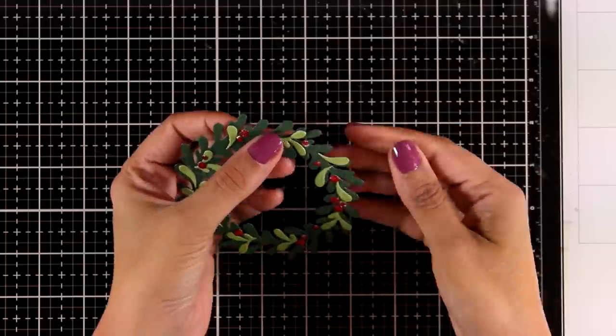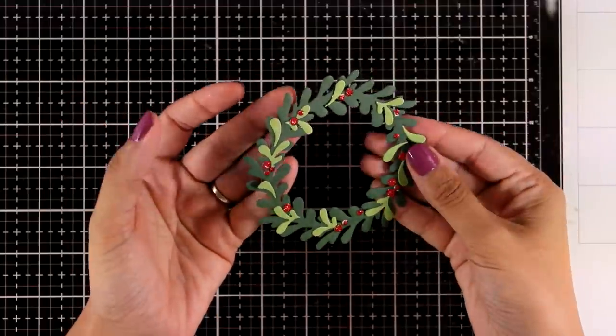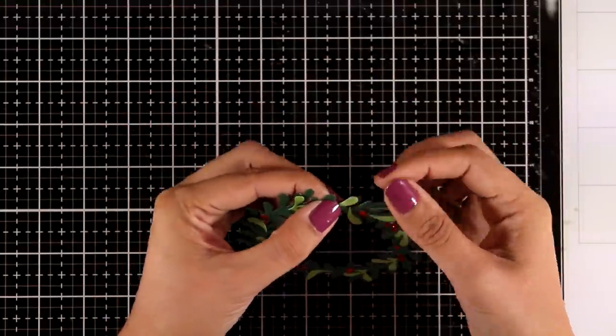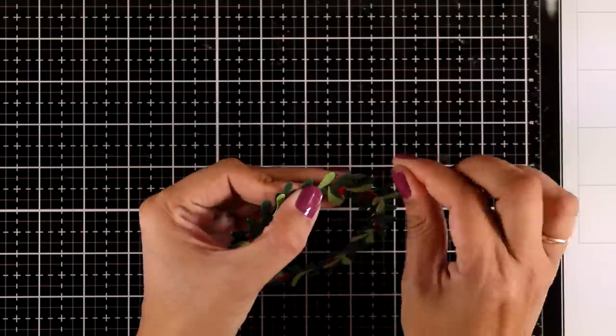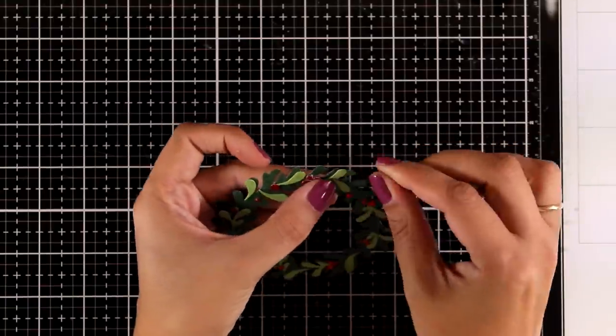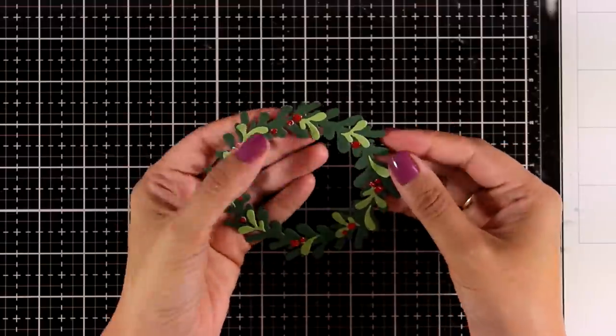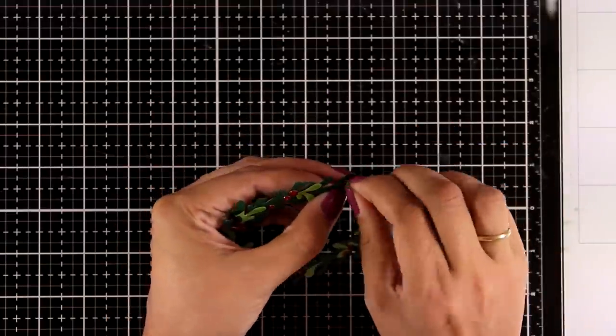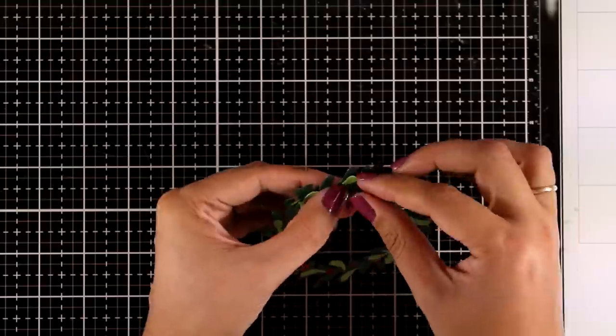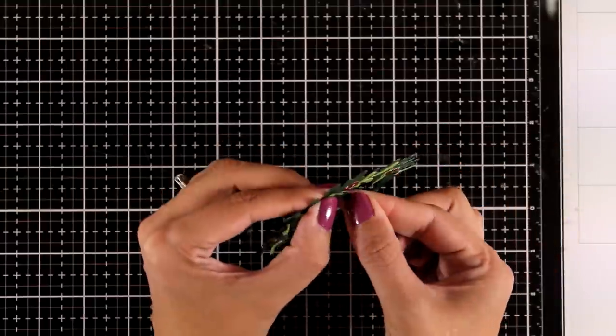So here's how the wreath is looking at the moment. You can make it more dimensional if you want by curling up some of those leaves. When I was sticking down all those green light green leaves, I made sure that I added glue only at the bottom of each of those leaves so that I can lift them easily now.